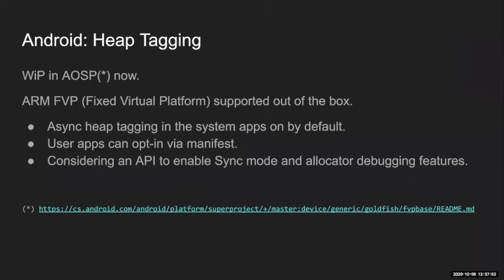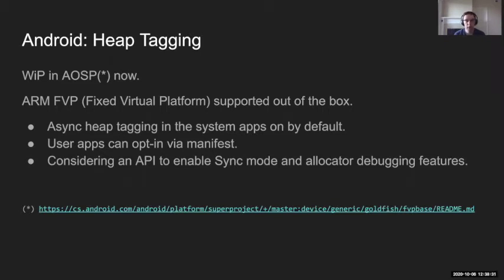We're working on implementing this in Android AOSP. There are instructions and a link at the bottom of this slide. You can build it and run it on the ARM fixed virtual platform simulator. The implementation plan: we expect to enable asynchronous mode heap tagging in all system apps and platform native daemons and components by default. User apps will not get it by default for stability reasons, but they can opt in via a manifest attribute that can enable heap tagging and also select between async and sync modes.